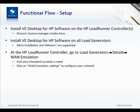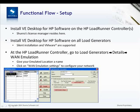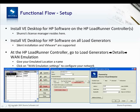Once you've installed everything, to configure the WAN emulation on a per load generator basis, you go to the controller and then your load generator manager. Within the details, there's a WAN emulation tab. You first give your emulated location a name and then click on the WAN emulation settings. From here you can configure your network.